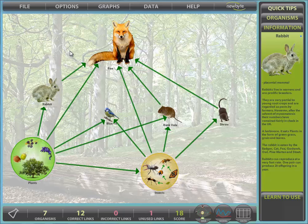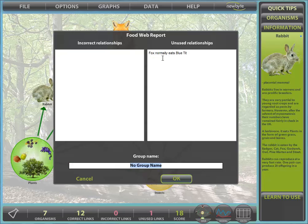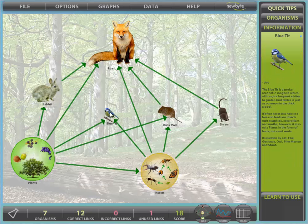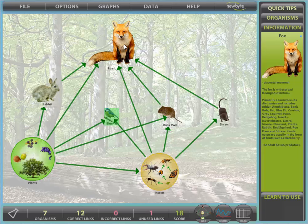Or we can view report in the options menu, which will supply incorrect and unused links. This report is not available while print-only mode is set by the teacher. We'll just add the final link. Now we have a complete FoodWeb.